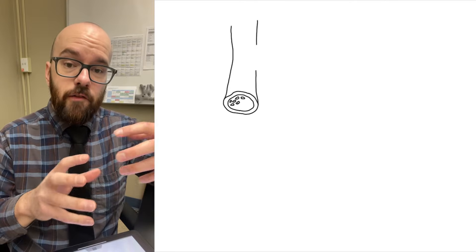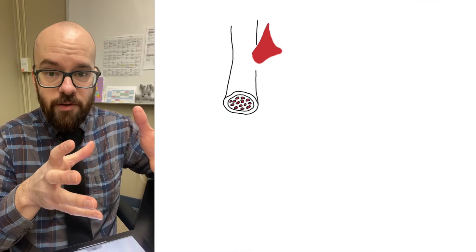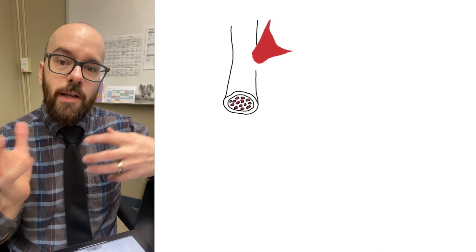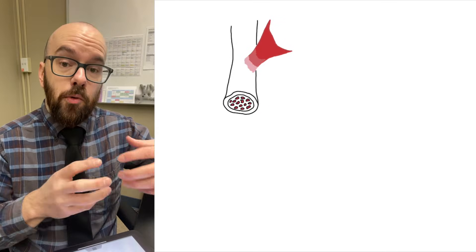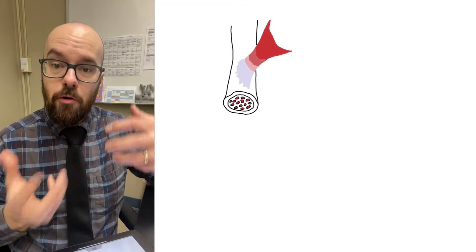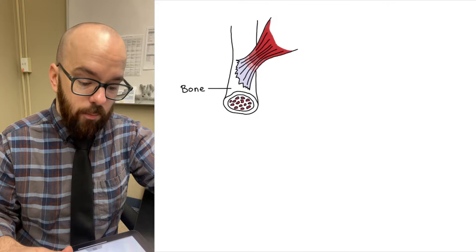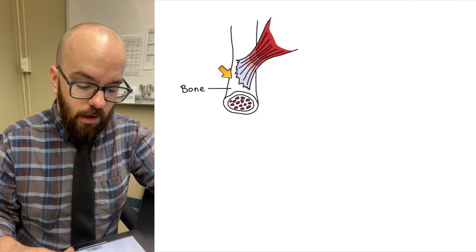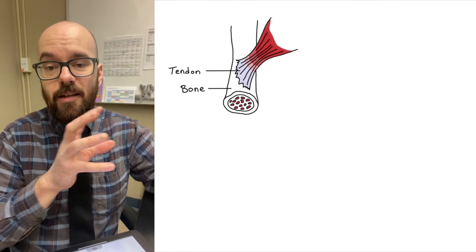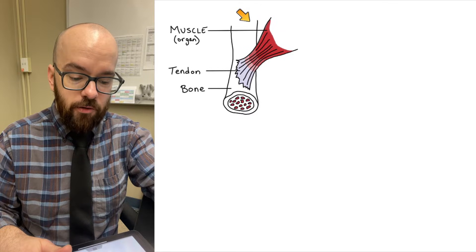In this video, we're going to look at the structure of a muscle. We're going to start at the organ level, looking at the whole muscle itself, and we're going to break it down piece by piece all the way down to the molecular level, where we'll look at the proteins that actually grab onto each other and pull in order for our muscles to contract. In this diagram right now, we've got a few organs we can see. We've got a bone here, and attached to that bone is going to be a tendon, and tendons connect bones to muscles, and so we have a whole muscle right here.